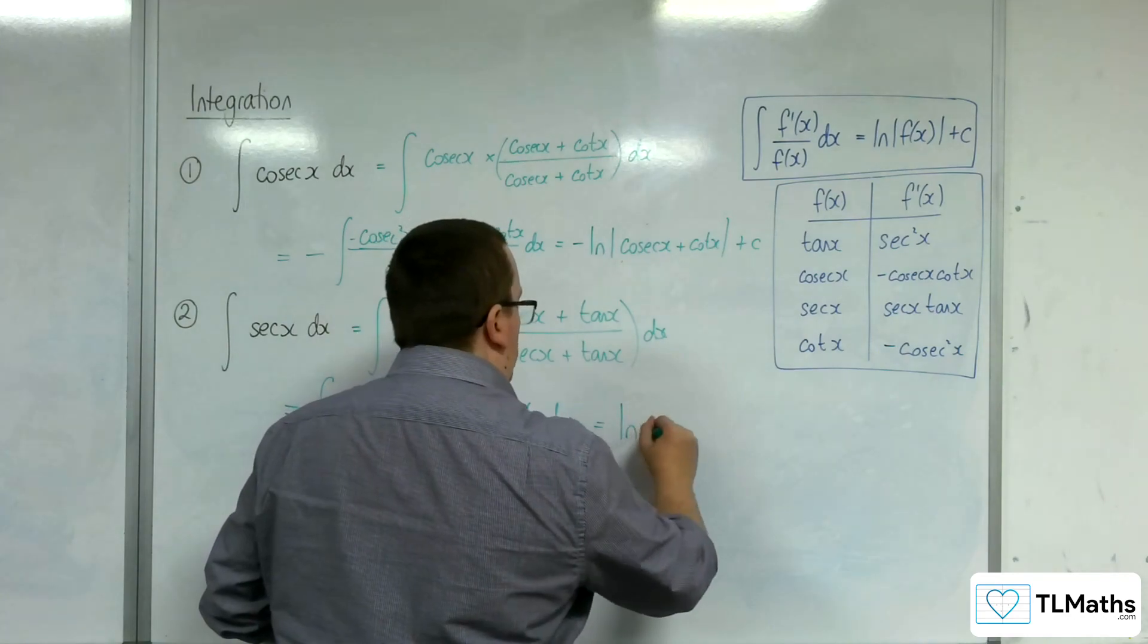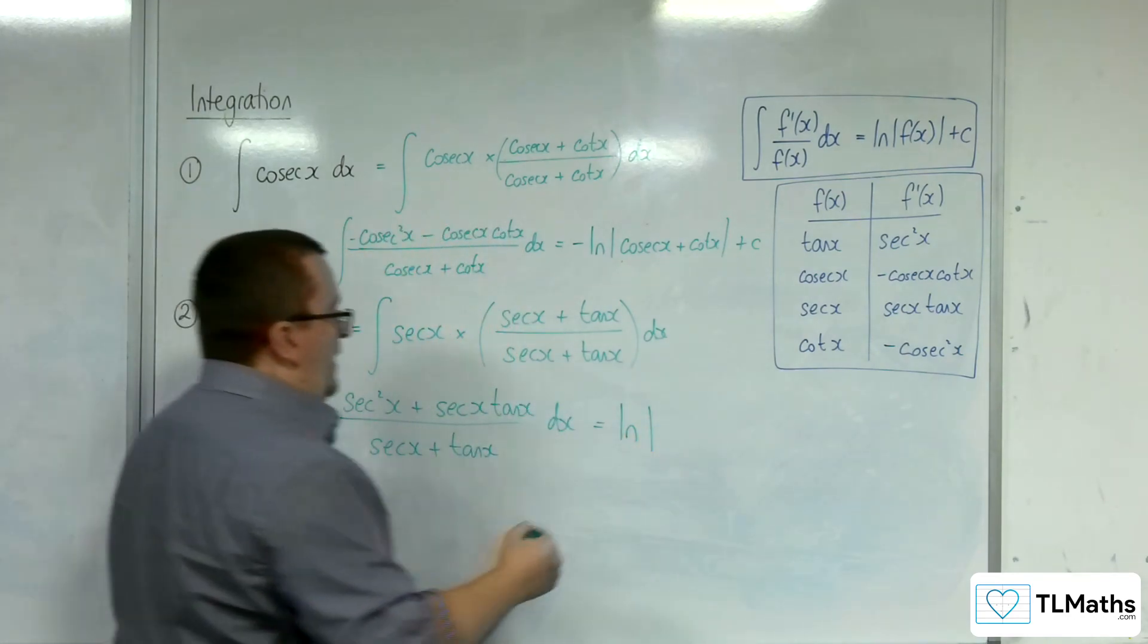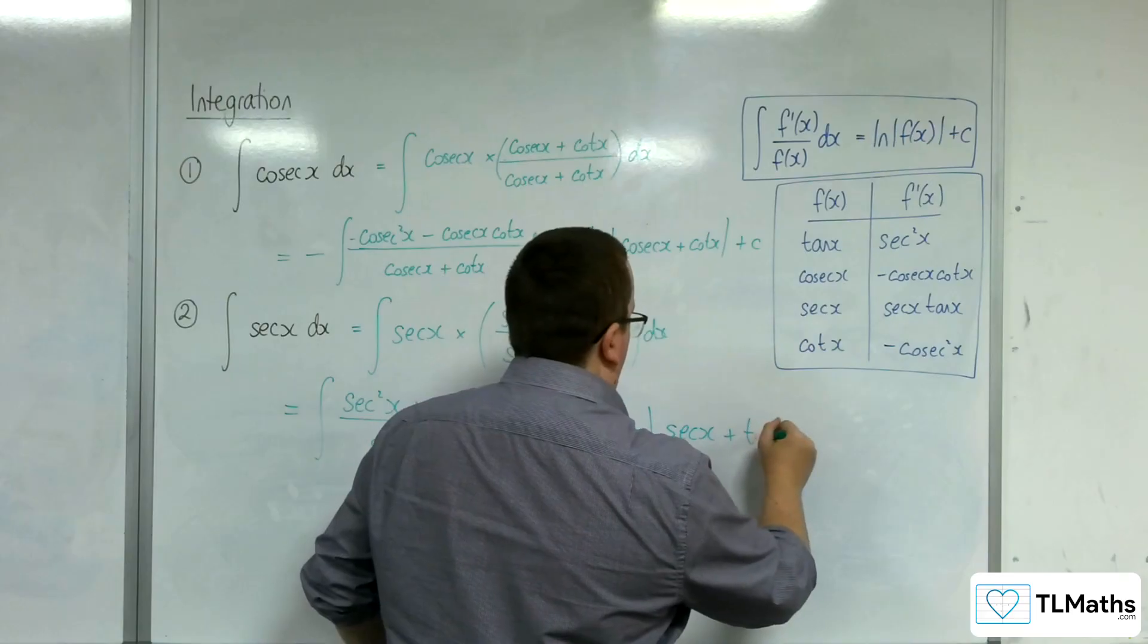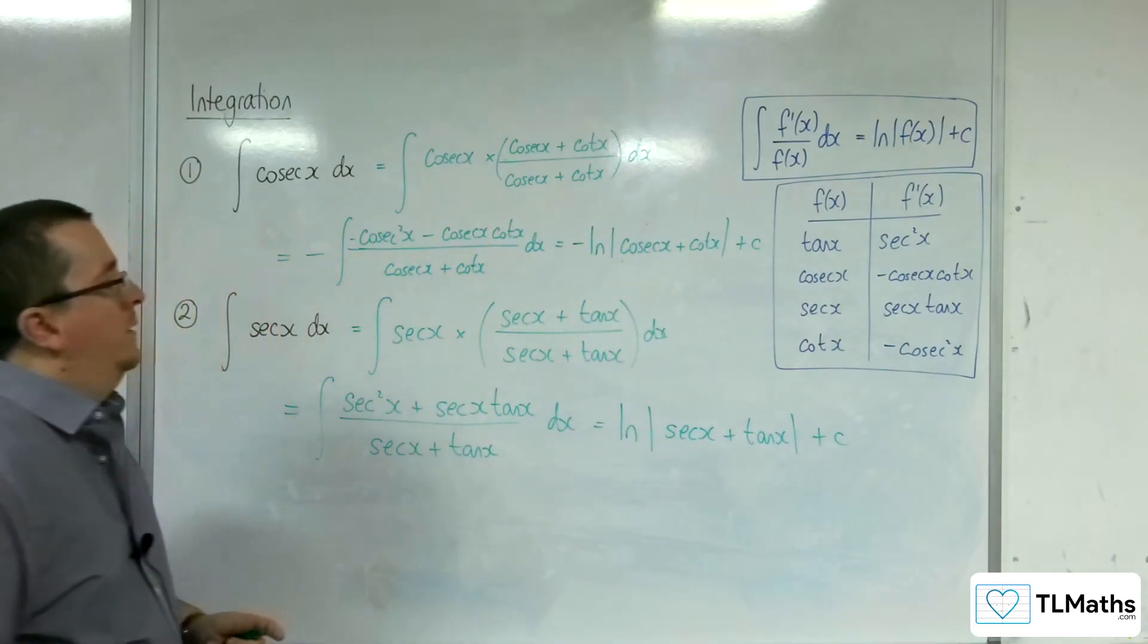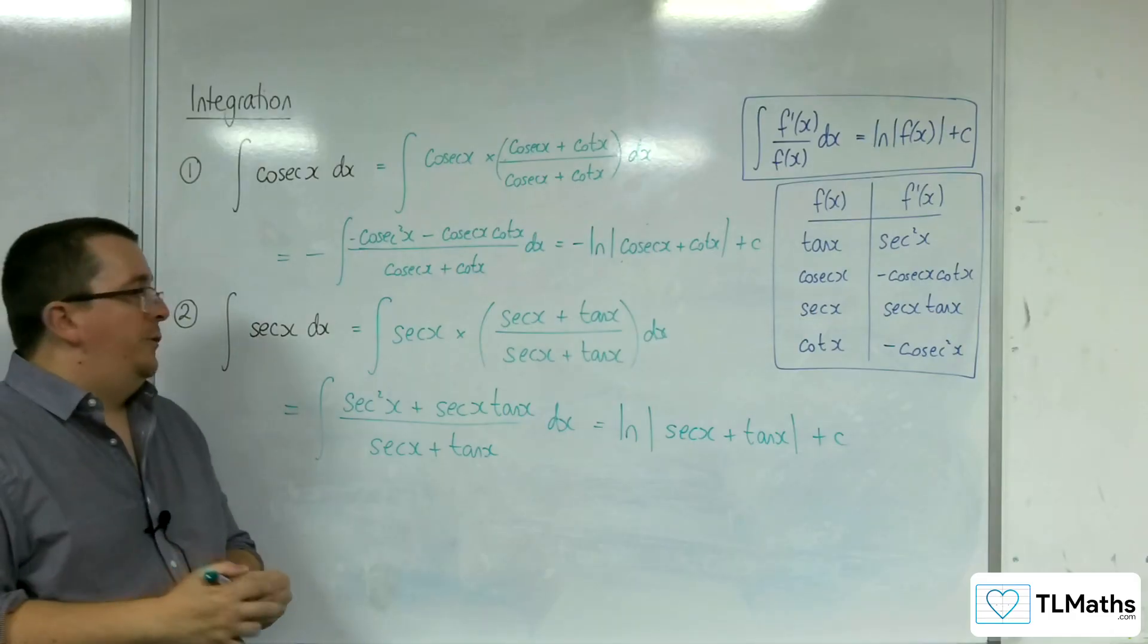And so this is the natural log of the modulus of sec x plus tan x, plus c. And that's how you integrate cosec and sec.